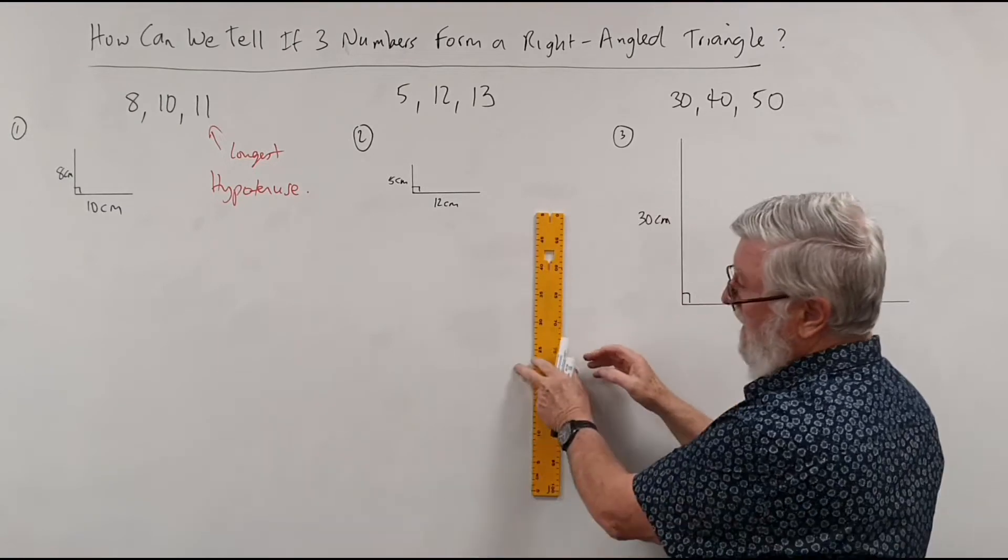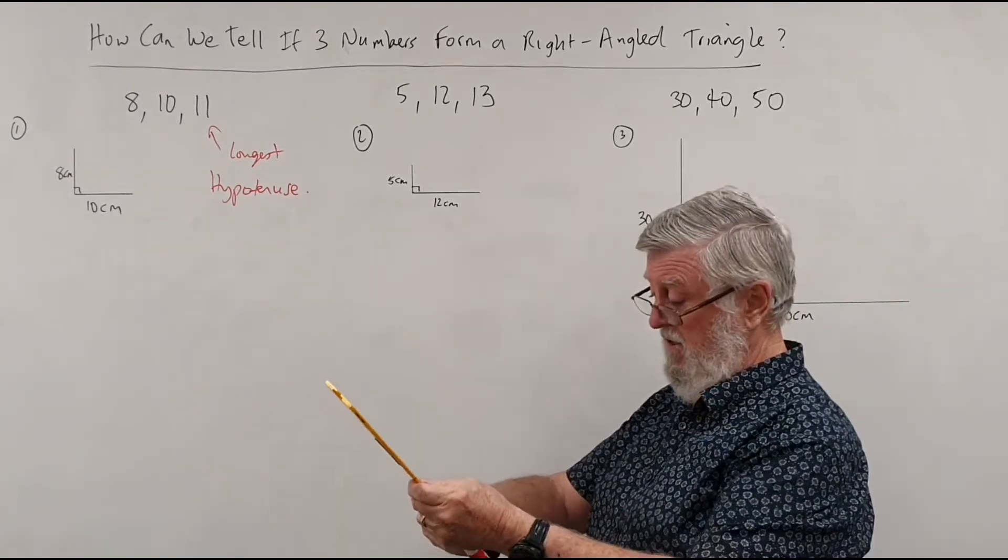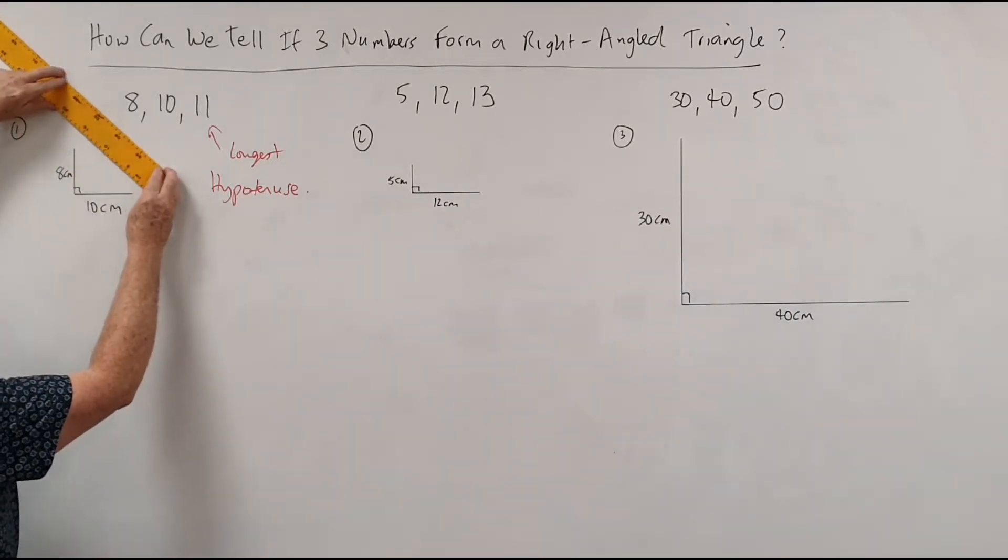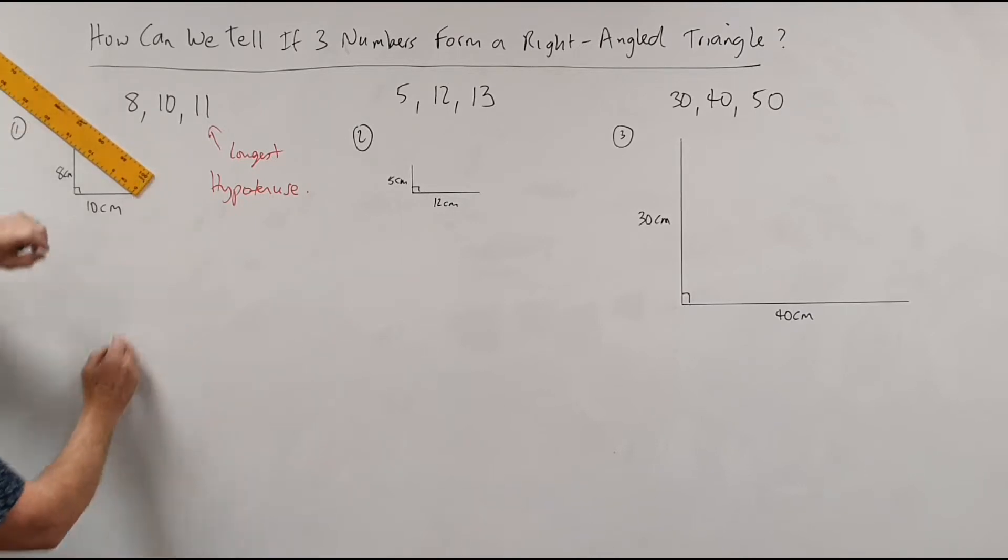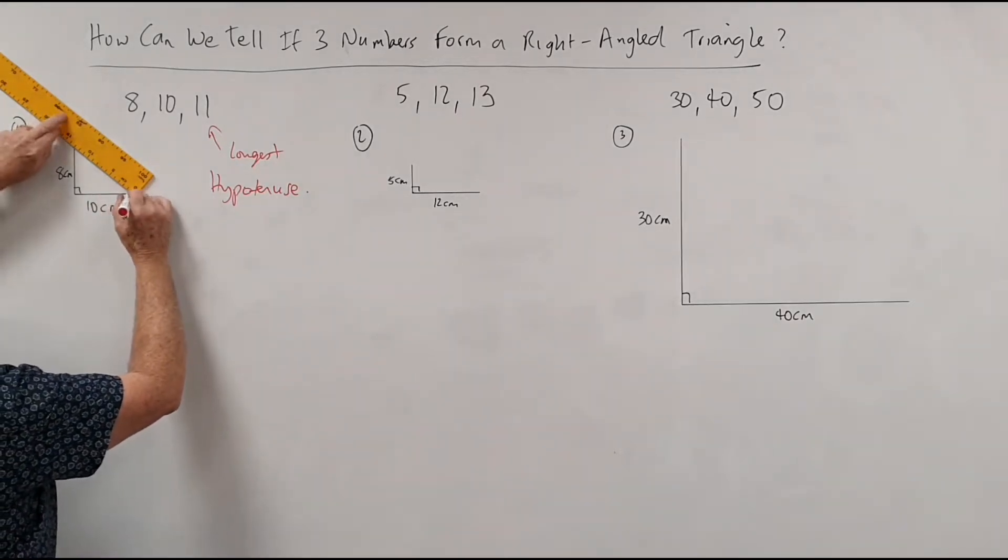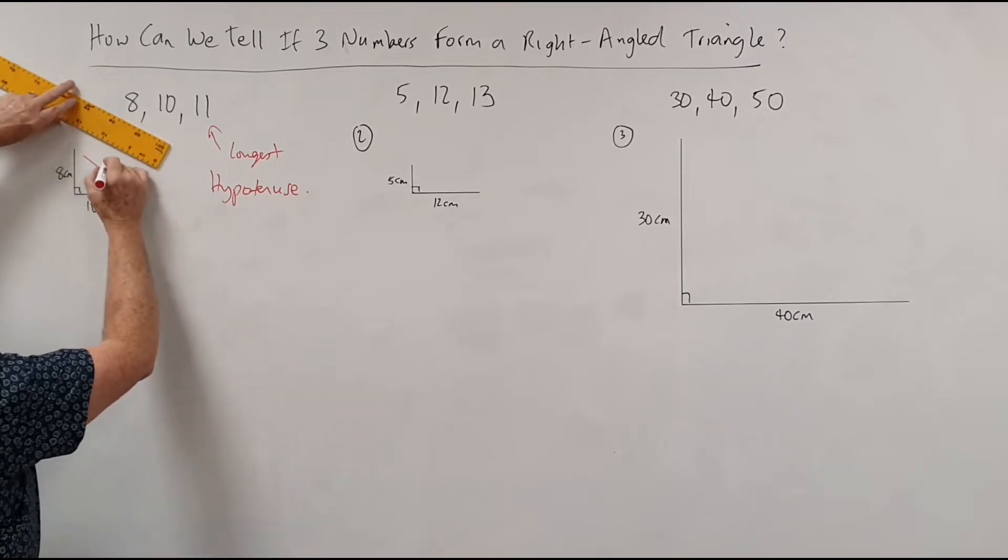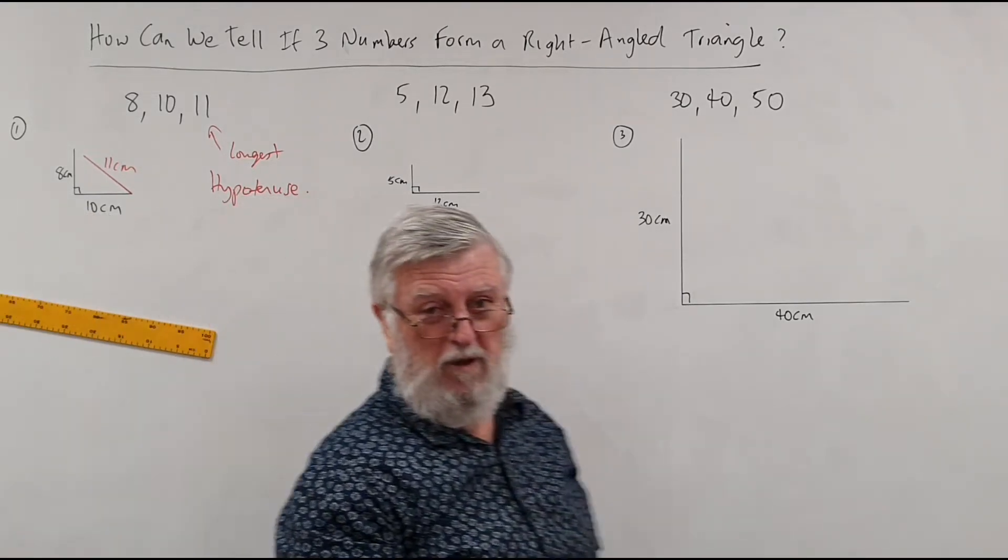Well okay, if I had 8cm and 10cm with the form of a right angle triangle and I can pull out my ruler and I've done this fairly accurately and I can measure across there, oh it's not 11, it's 13. So if I actually drew in the 11, and I looked at my 8, my 10, my 11, it didn't even make it. So it's nowhere near forming a right angle triangle.